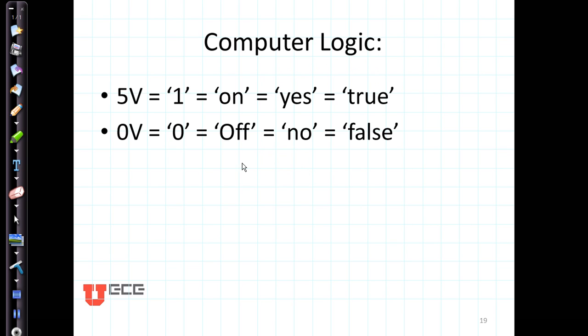Computer logic is going to use on and off, switches on and off, computer circuits on and off, representing one and zero, and these represent yes and no, or true and false values. They're typically five and zero volts.